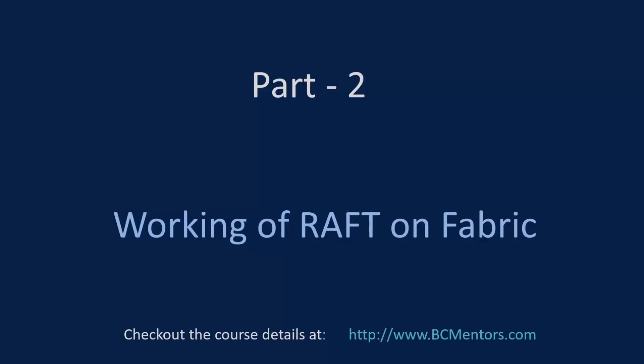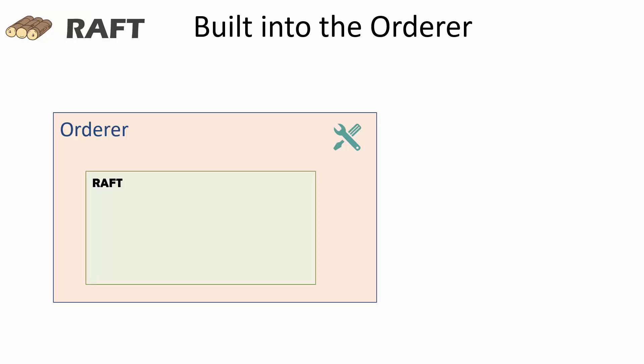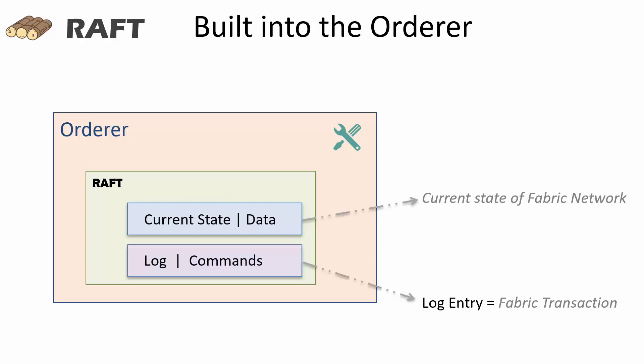Now that you understand how the raft consensus algorithm works, let's talk about how raft works on fabric network. The raft node functionality is built into the orderer binary. This raft node manages the current state. And in the case of fabric network, it manages the state of the fabric network.